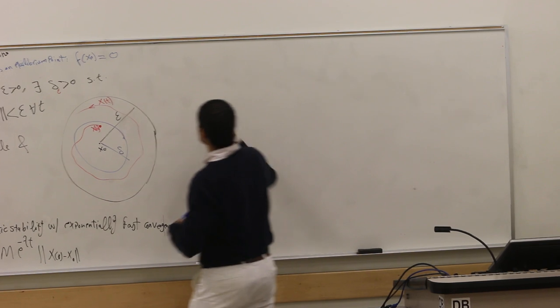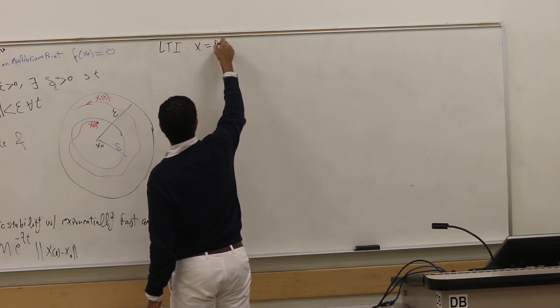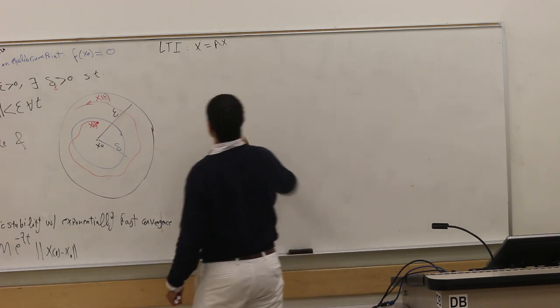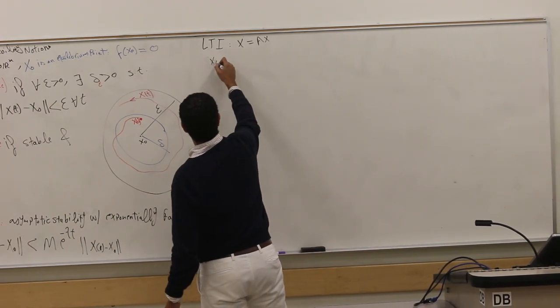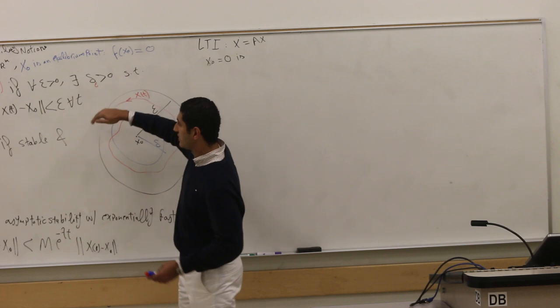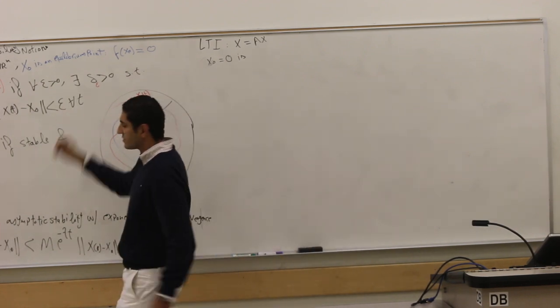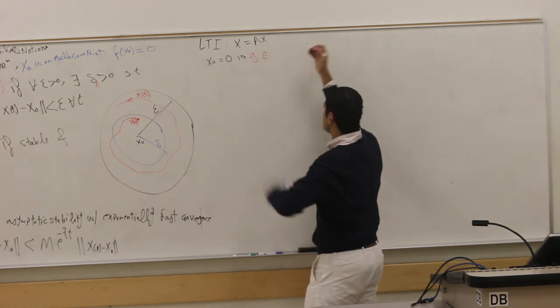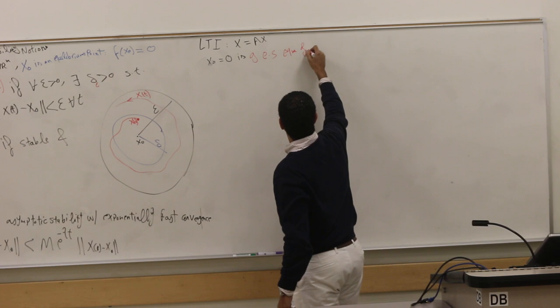So for linear systems - so LTI, our paradise, x dot equals Ax plus Bu, or, you know, there is no control here. The origin, x dot is 0, you get all of them. You get the hierarchy. So this is a hierarchy, right? So here stability is the weakest, then you add something, then you add something, and so on. So you get all of them. It's globally, exponentially, asymptotically stable point. So it's globally, exponentially - if you said exponentially, you don't need to say asymptotically.